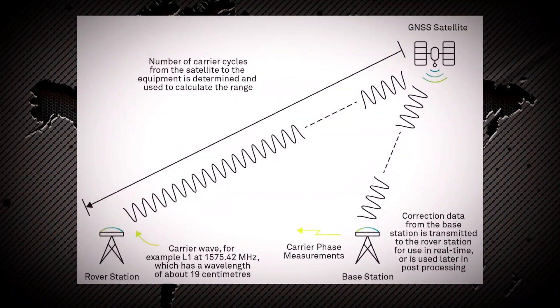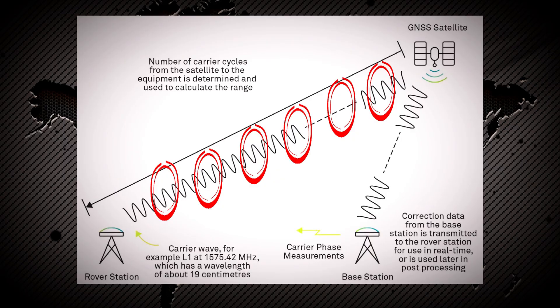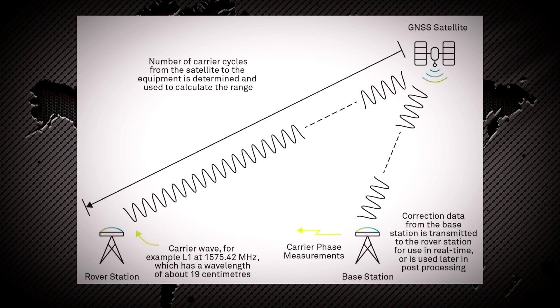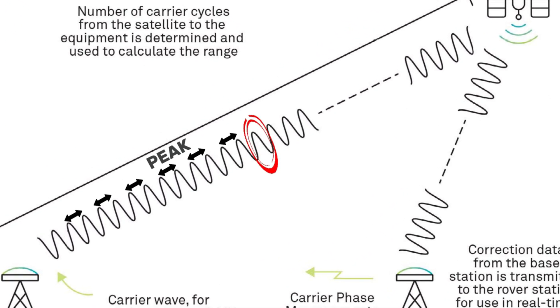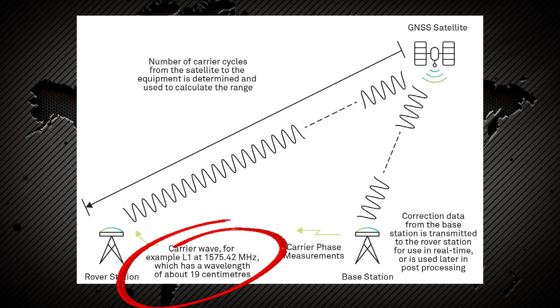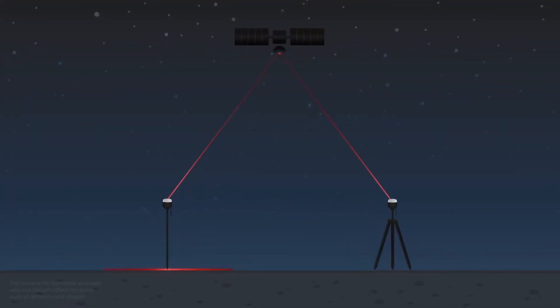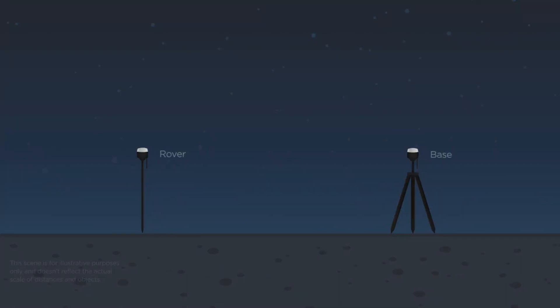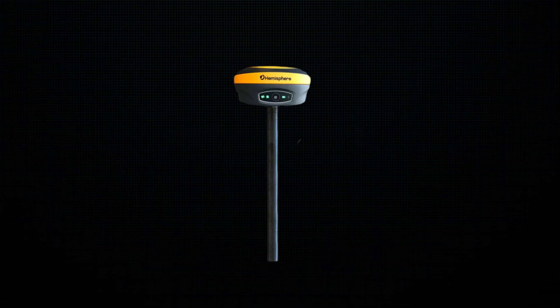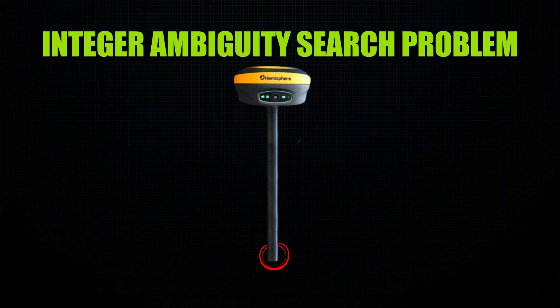With RTK, it's a lot more complicated than calculating an autonomous position because we're really going to be focusing on the carrier wave — we're measuring the cycles on the carrier. With any wavelength, we have a cycle between each peak. In the case of an L1 signal, that's 19 centimeters. If we know that, we can calculate the range to the satellite based on the number of cycles it takes for the signal to arrive at our receiver. By measuring that at both the base and the rover, we can solve our integer ambiguity problem and correct for a centimeter-accurate position.